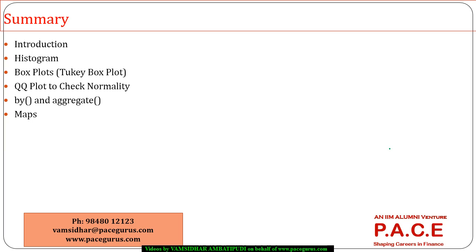So right now you can explore more and more deeply into the rworldmap package, which can do lots of map plotting for us. This is what I really wanted you to understand as part of this session — we focused on histograms, box plots, QQ plots to check normality, the by and aggregate functions, and finally had a small discussion on maps. I hope you got clarity in the usage of all these functions. Thanks a lot for listening to this session.